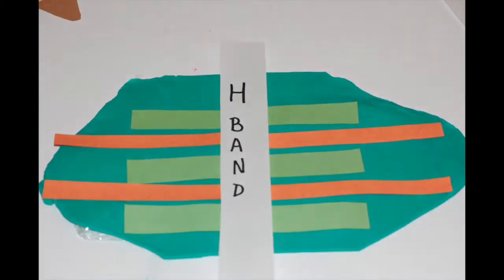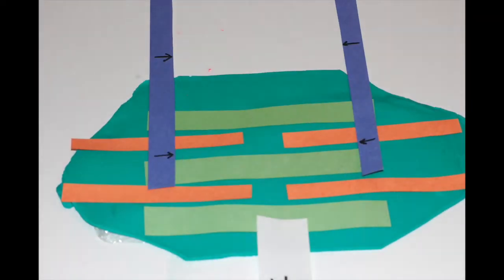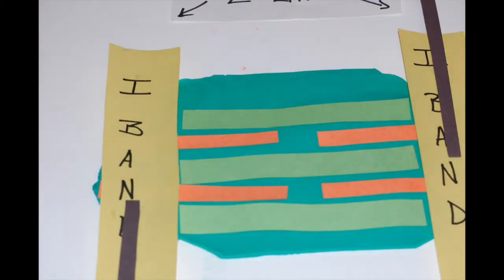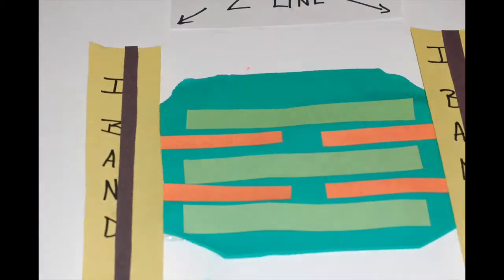One more time: M out to H out to A out to I, M out to H out to A out to I. In the middle of the I band you'll find a Z line.